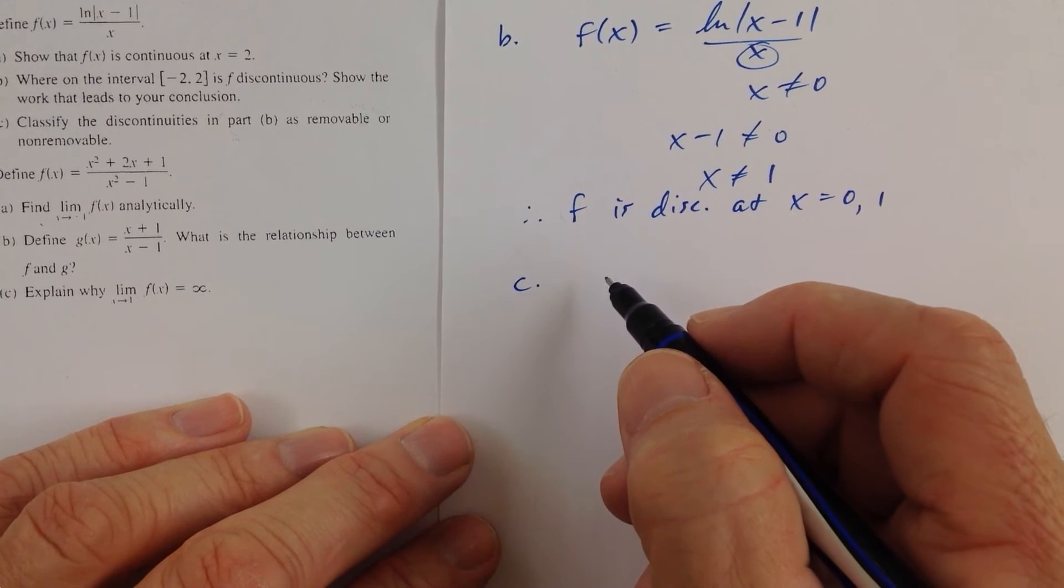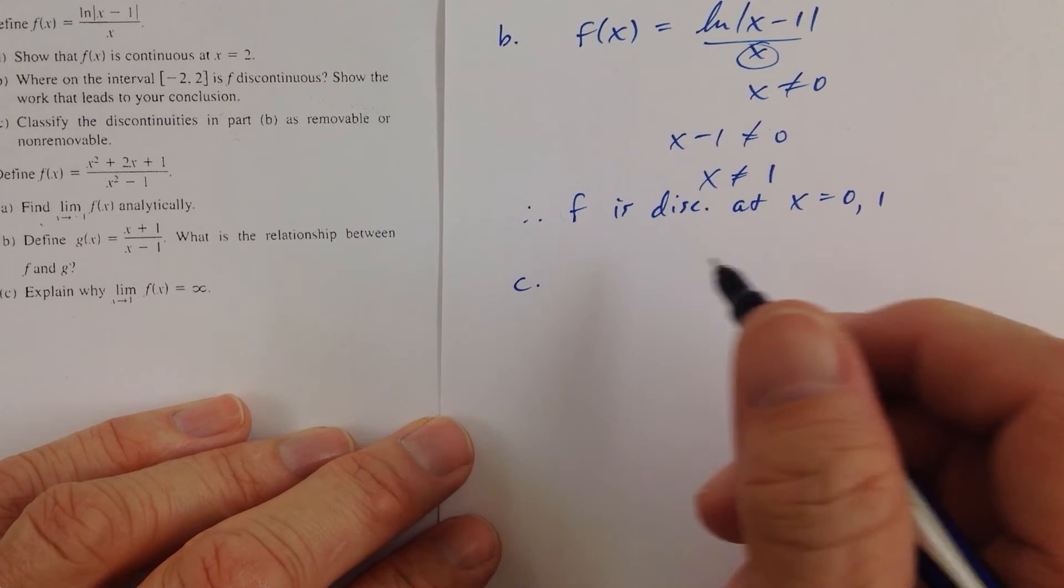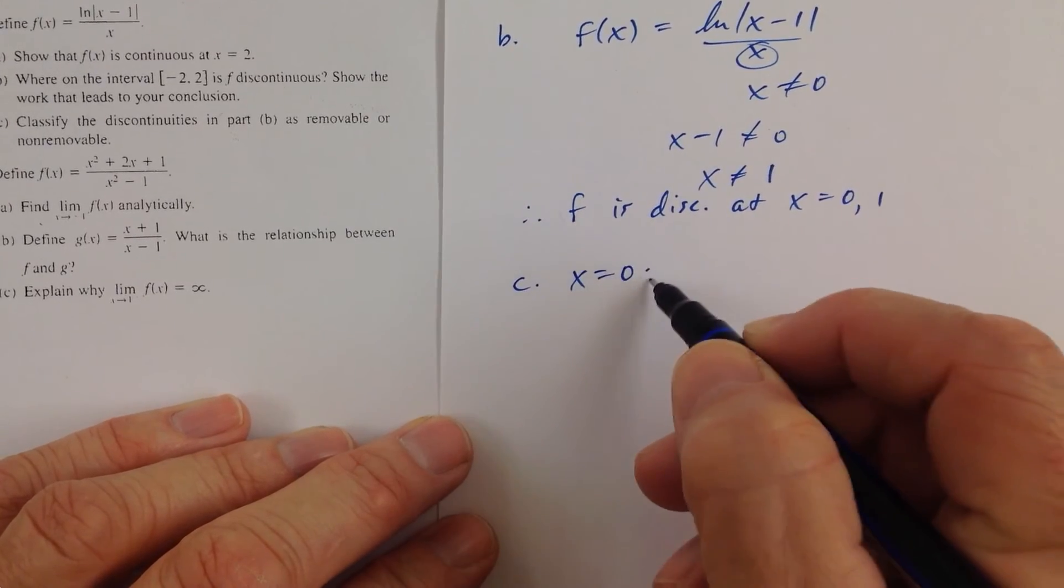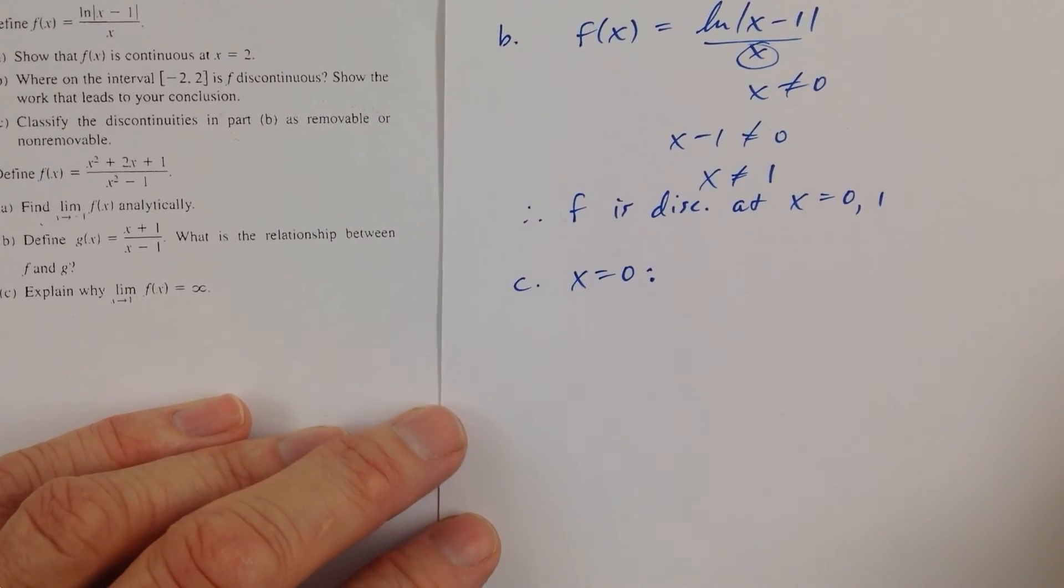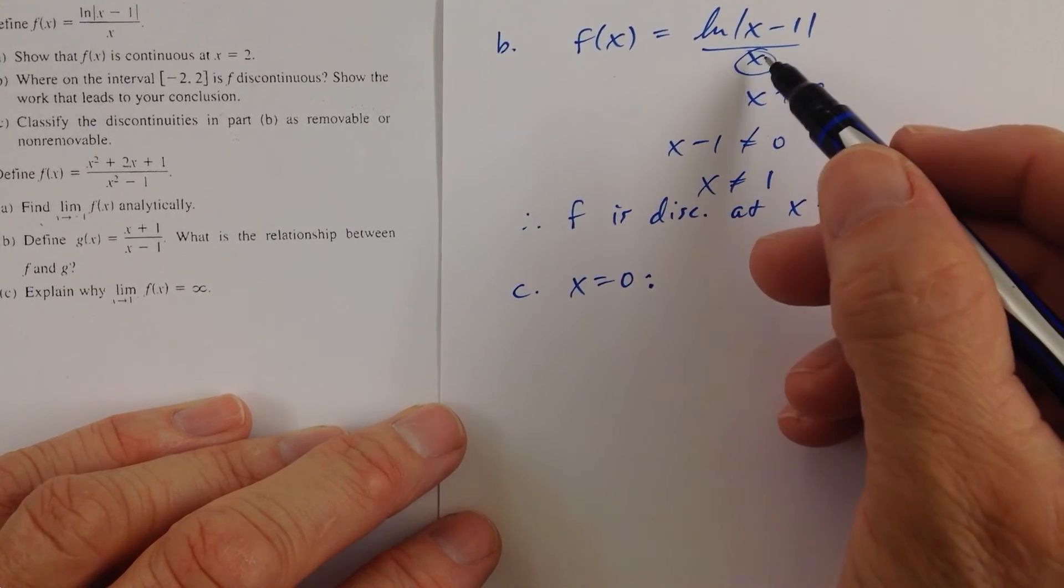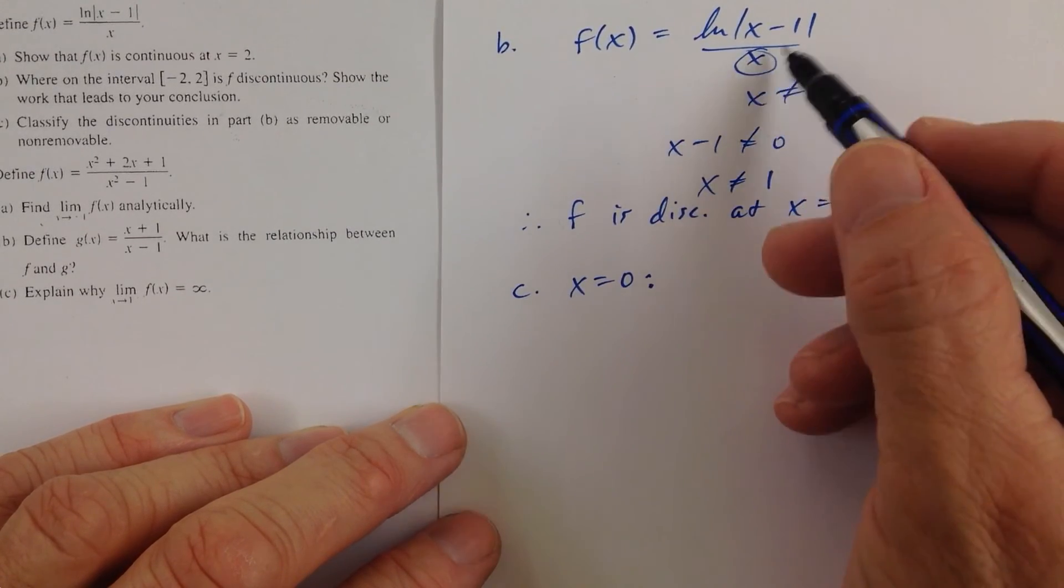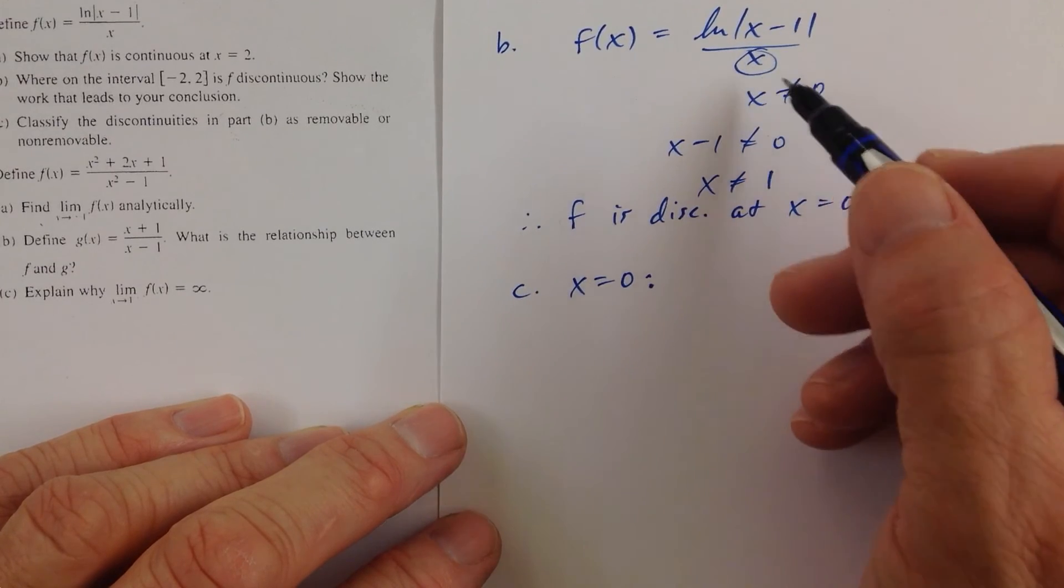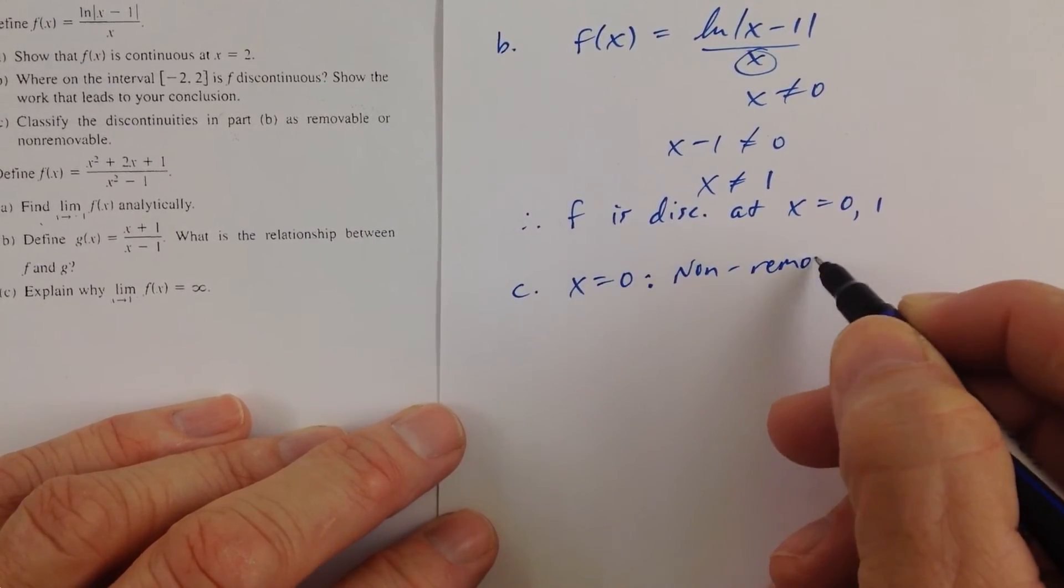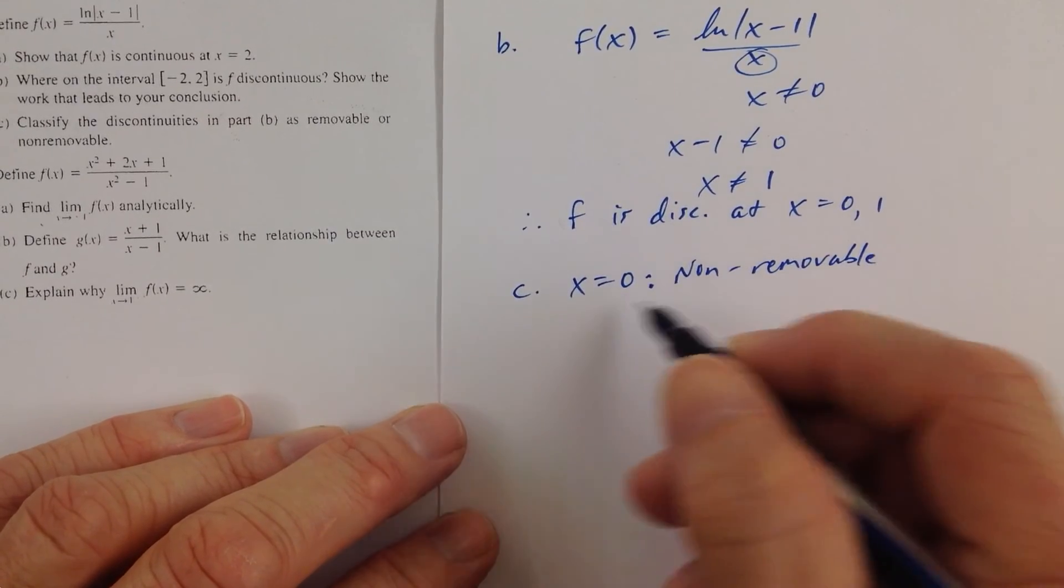So part C, the discontinuities in part B is removable or non-removable. So, at x equals 0, what do we have here? Well, that's an infinite discontinuity there. The denominator, we can't cancel that factor of x with any other factor upstairs, so that would be non-removable. That would be an infinite discontinuity.